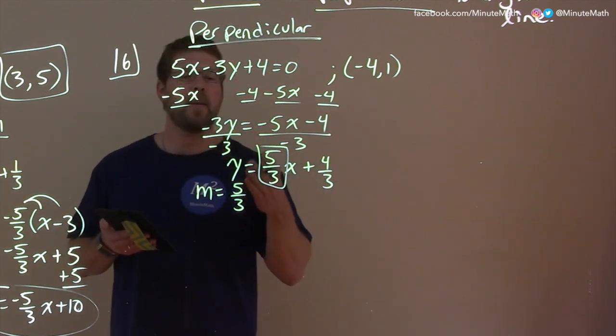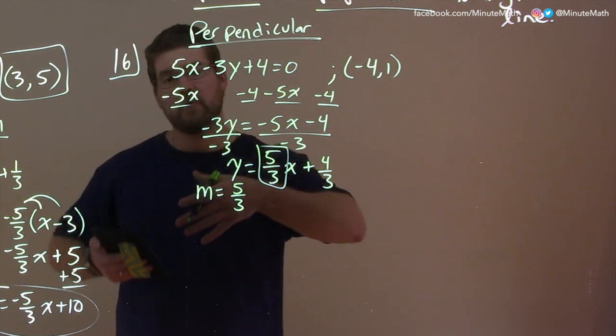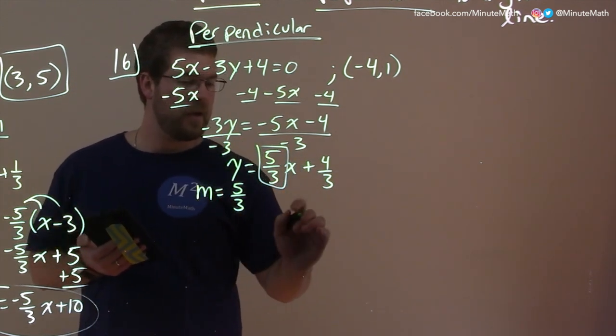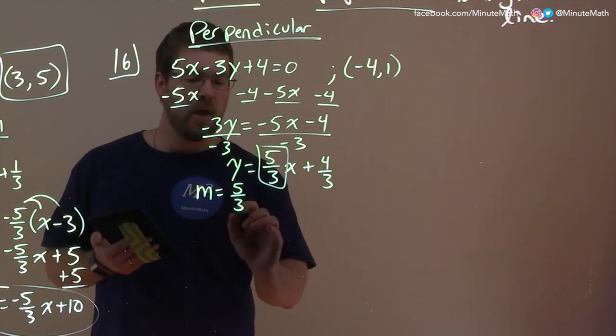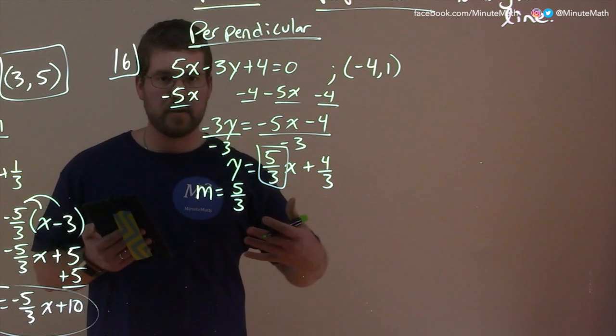But we want to find a perpendicular slope. So perpendicular slopes we know is what we call the opposite reciprocal. So a way to do that, so we have our slope 1, and we want to find the perpendicular slope. We take that 5 thirds, and we're going to flip it, and put a negative sign on there.